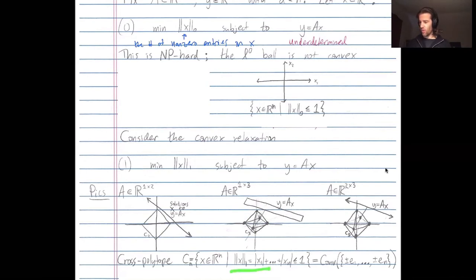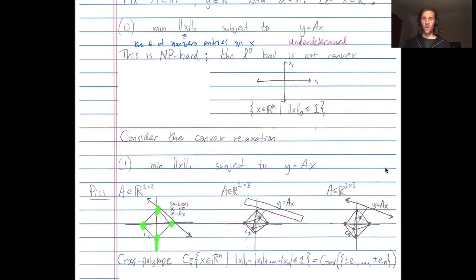Another name for the L1 ball of radius one is the cross-polytope. These L1 balls are the same as taking the convex hull of the standard basis vectors along with their negatives. So take e1 and its negative, e2 and its negative, take the convex hull — that's the cross-polytope or the L1 ball of radius one. Same thing in 3D: take e1, e2, e3 and all their negatives, take the convex hull, and you get the cross-polytope.